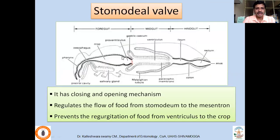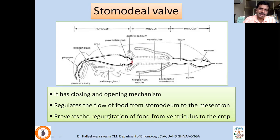At the junction of the foregut and midgut, there are pair of valve-like structures called stomodial valves. These valves have a closing and opening mechanism that regulates food movement from foregut to midgut and also prevents regurgitation of food from midgut back to the foregut. The stomodial valve marks the end of the foregut and the starting point of the midgut.